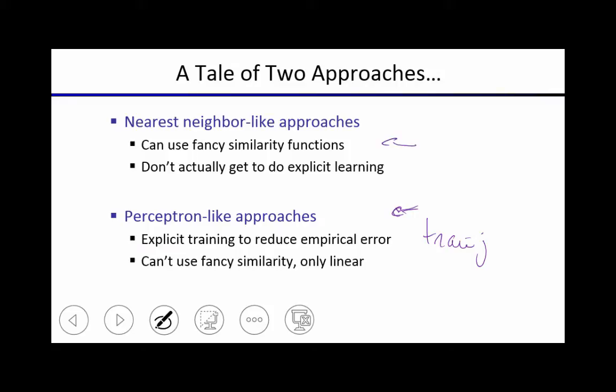In the nearest neighbor-like approach, at best you'd have some kind of holdout phase where you would say, well, I have maybe 10 different similarity metrics. Let's check on my holdout data which of those 10 similarity metrics does best, and then go with that similarity metric for my test data. But you don't have the explicit training on the training data.